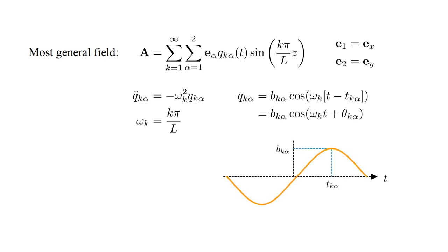Although the frequency ω_k is fixed, the amplitude b_{k,α} and time offset t_{k,α} can be any real numbers. So each mode can be arbitrarily scaled in amplitude and arbitrarily shifted in time.